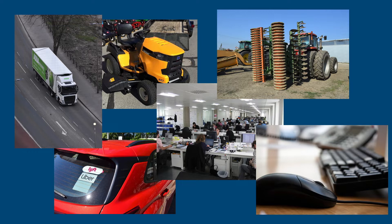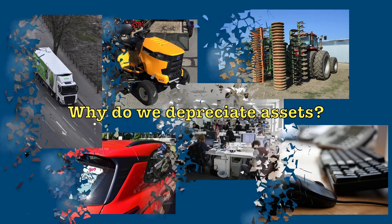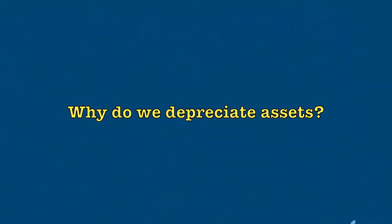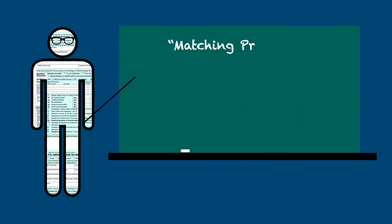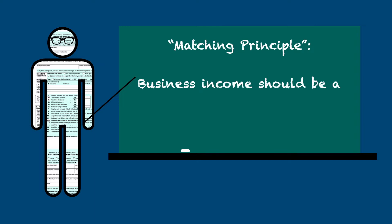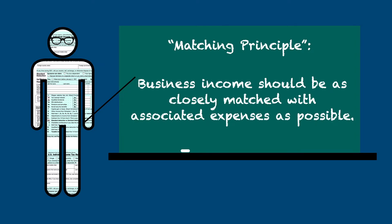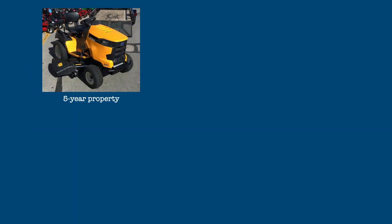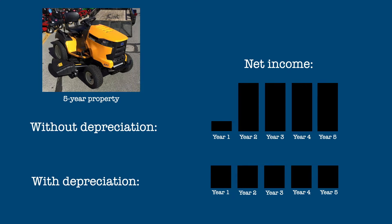Before we go into detail on MACRS, let's ask the question: why do we depreciate assets? It's not simply that business assets wear out over time. Depreciation is a key part of the matching principle, a generally accepted accounting principle stating that business income be as closely matched with associated expenses as possible. So if you purchased an asset with a useful life of five years and deducted the full cost in the year it was purchased, your business's net income would be substantially understated that year and significantly overstated in the other four years. This is not a realistic depiction of net income.